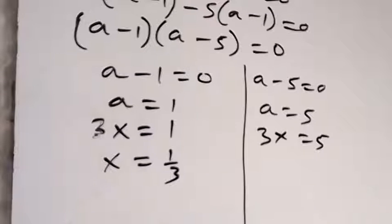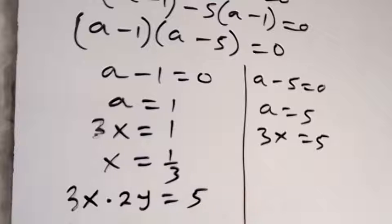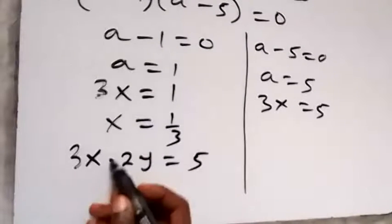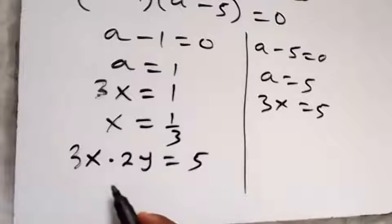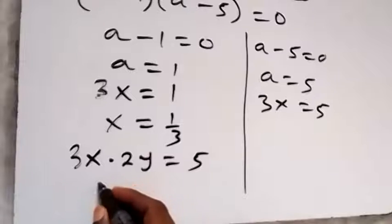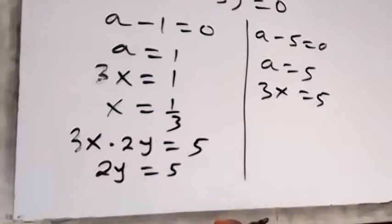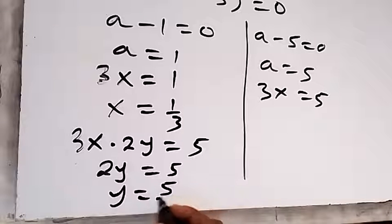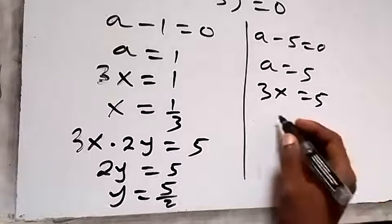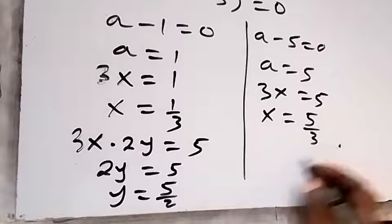To find y, we use the equation 3x times 2y equals 5. For x equals 1/3: 3 times 1/3 gives 1, so 2y times 1 equals 5, meaning 2y equals 5, and dividing both sides by 2, y equals 5 over 2.